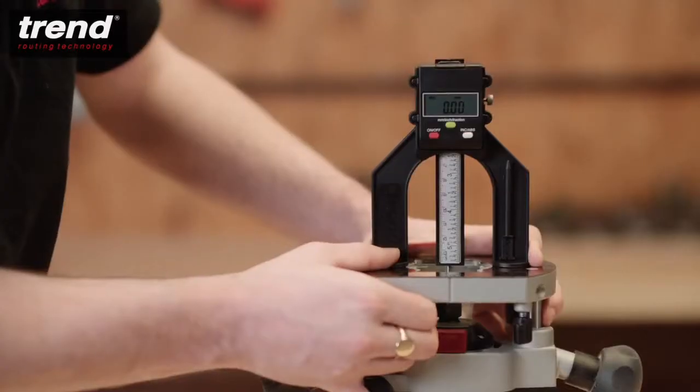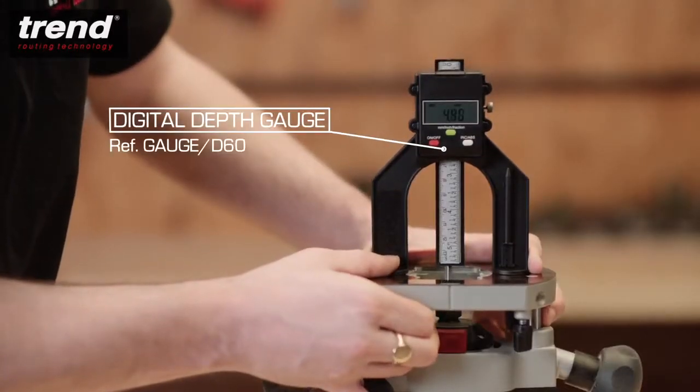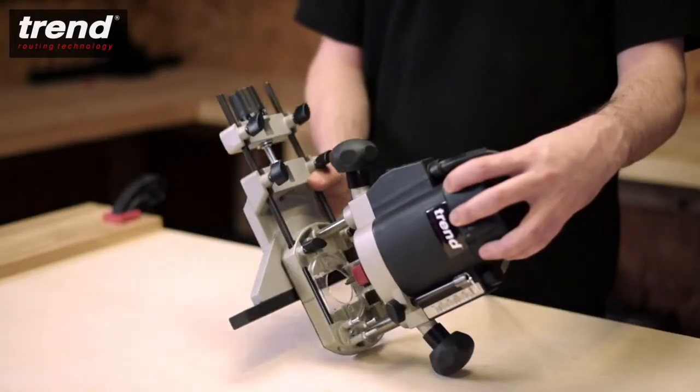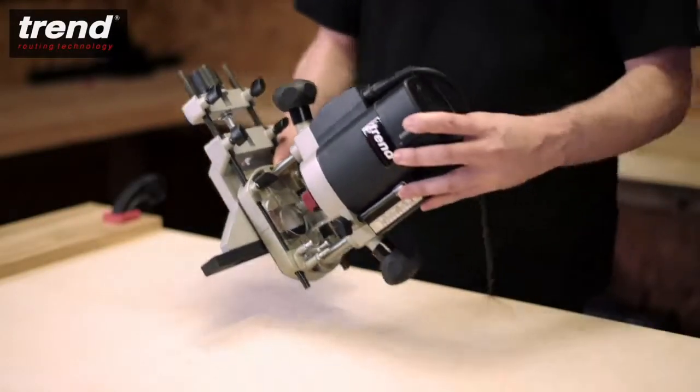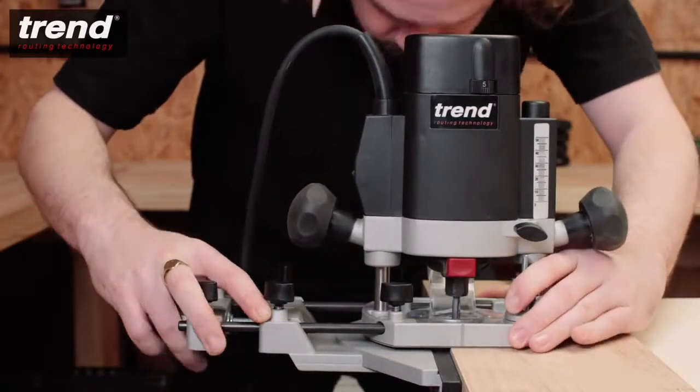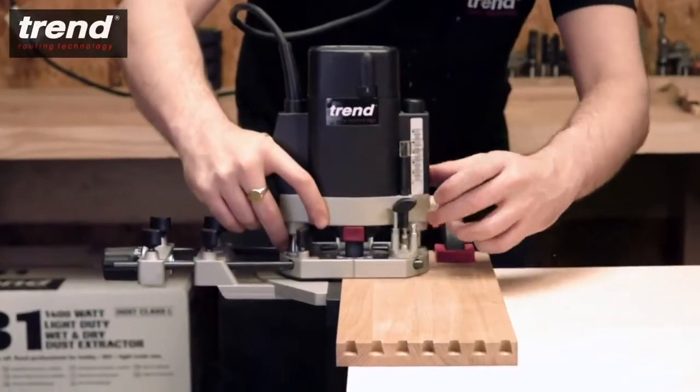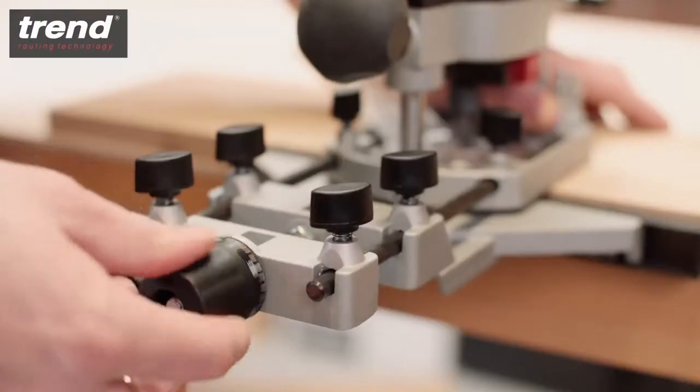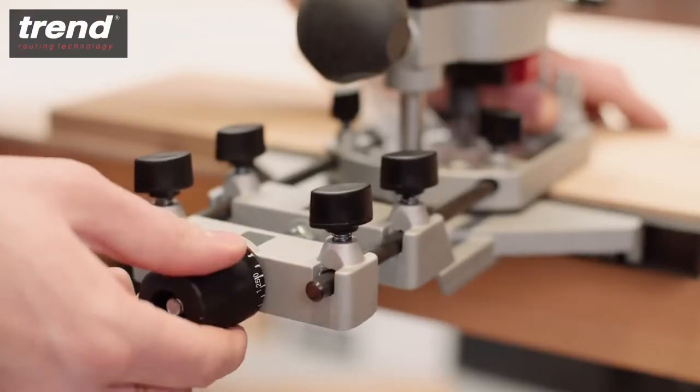The Trend Digital Depth Gauge can be used for precise measurements. The side fence included simply slides into the router base. It's used to guide the router along a straight edge when moulding, edge profiling, rebating and grooving. It has a fine adjustment feature for precise machining.